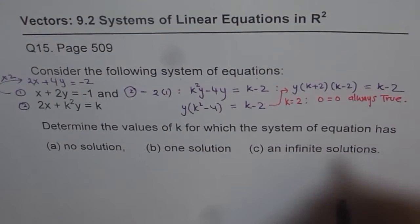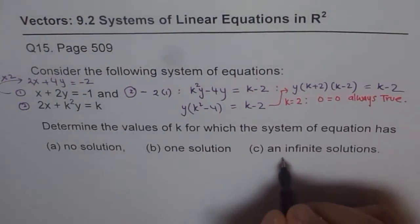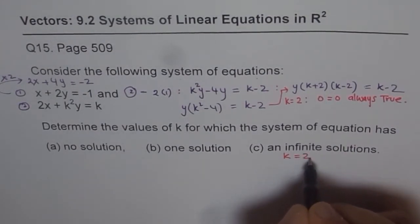Always true means infinite solutions. So for infinite solution, we get k equals to 2. Do you see that?